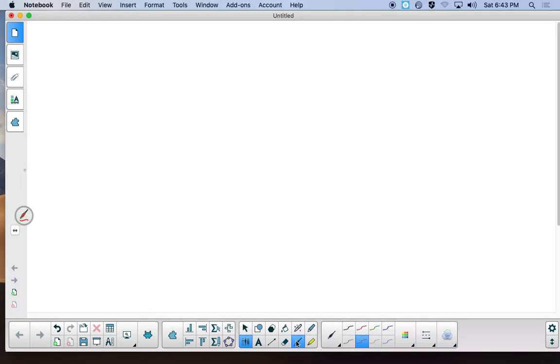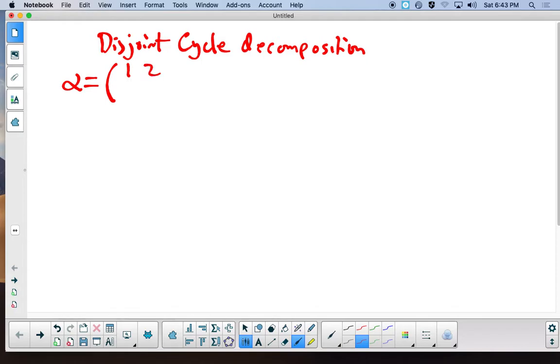Today, I want to start with a review of disjoint cycle decomposition inside of S_N. The easiest thing to do for a review is to remind you that if we take a permutation, say inside of S_6, and let's send 1 to 3 and 2 to 4 and 3 to 5, and 4 goes back to 2 and 5 will go to 6 and 6 will go to 1.